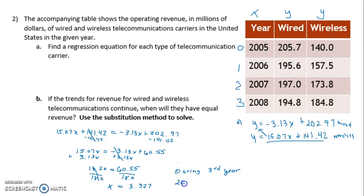And so if I take 2005 and I add 3 to it, I get 2008. So it's during that year that they will have equal revenue, and it looks like almost a third of the way through that year.